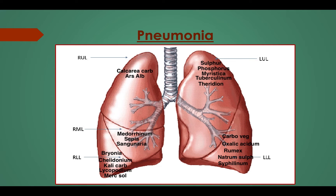Pneumonia in right upper lobe: Calcarea carb and Arsenicum album. Right middle lobe: Medorrhinum, Sepia, Sanguinaria. Right lower lobe: Bryonia, Chelidonium, Kali carb, Lycopodium, Mercurius. Left upper lobe: Sulphur, Phosphorus, Meristiqua, Tuberculinum, Theridion. Left lower lobe: Carbo veg, Oxalic acid, Rhus tox, Natrum sulph, Syphilinum.